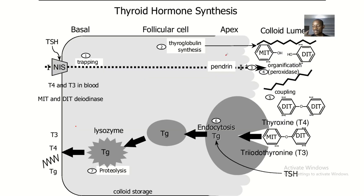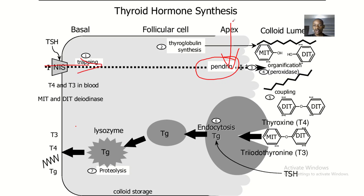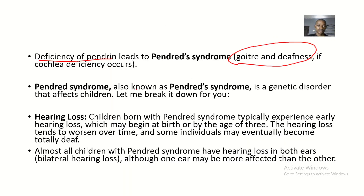Looking at this comprehensive pathway that leads to the production of thyroid hormone, pendrin oversees the trapping of iodine from the apex of the cell into the cell. Iodine also comes through the basal membrane, and pendrin oversees this action. Pendred Syndrome is a genetic disorder that affects children.